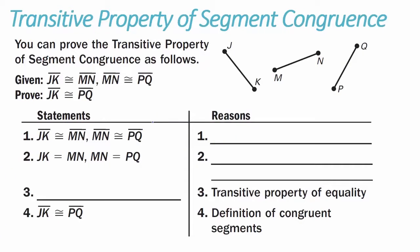Here's our first example in writing proofs of segments, using the transitive property of segment congruence. You can prove the transitive property of segment congruence as follows. Given: line segment JK is congruent to line segment MN, and line segment MN is congruent to line segment PQ. Prove that line segment JK is congruent to line segment PQ. We start by writing our givens.